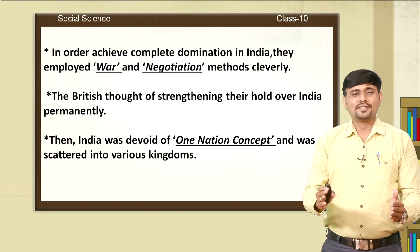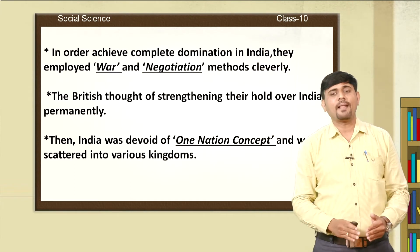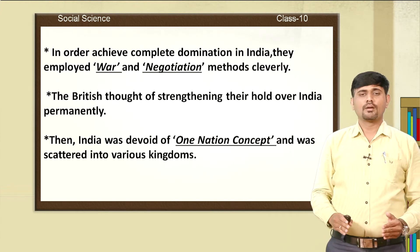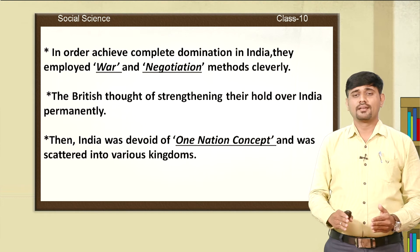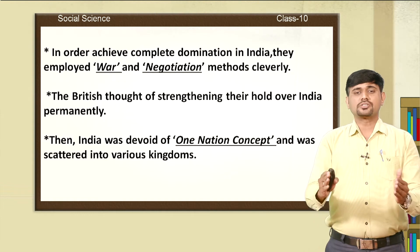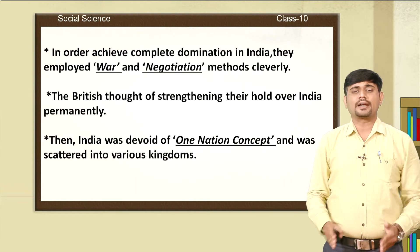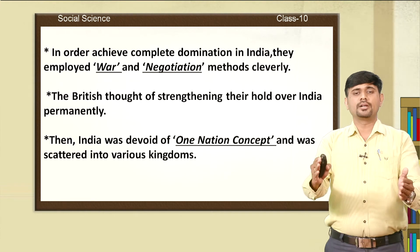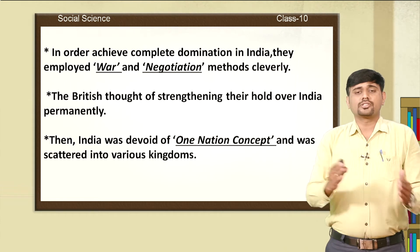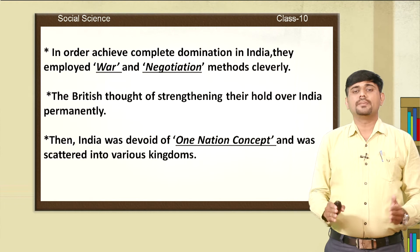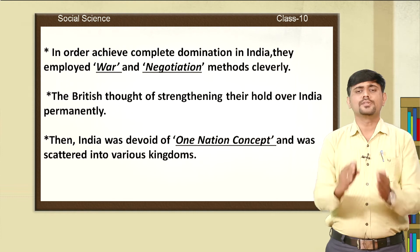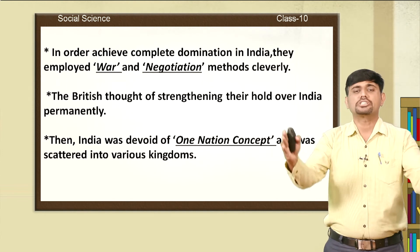In order to achieve complete domination in India, the British employed war and negotiation methods cleverly. There were some kingdoms who opposed the British government. The British East India Company, by declaring war against those kingdoms, was able to capture small provinces into the British Empire. Also, by making some treaties and agreements with some of them, they captured more provinces. They used these methods very cleverly to expand the British Empire in India.